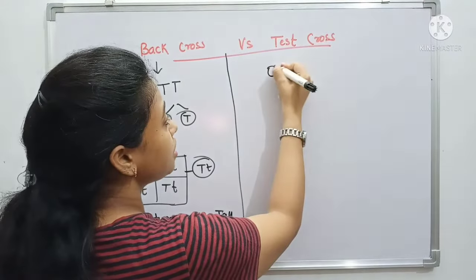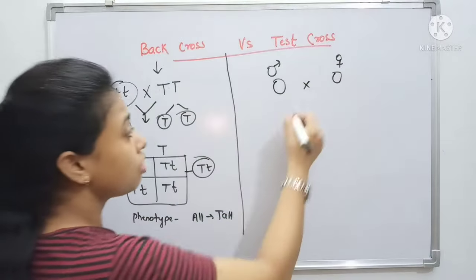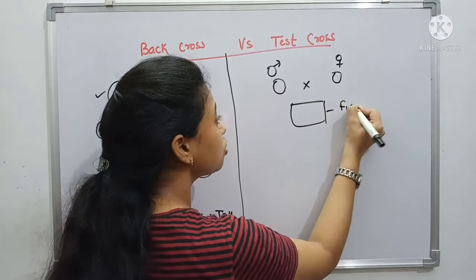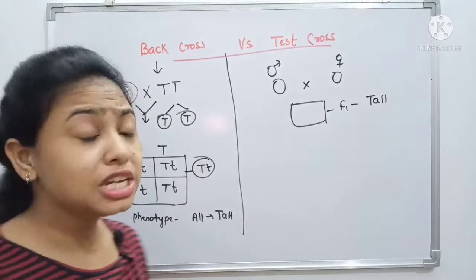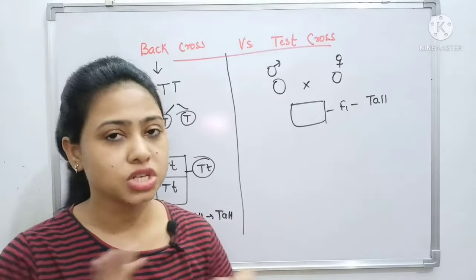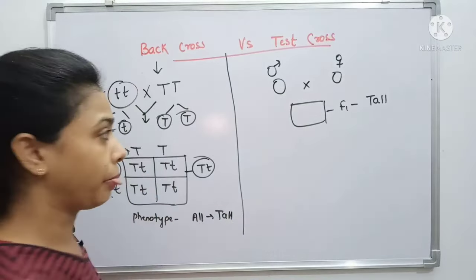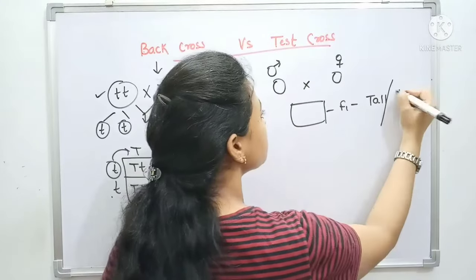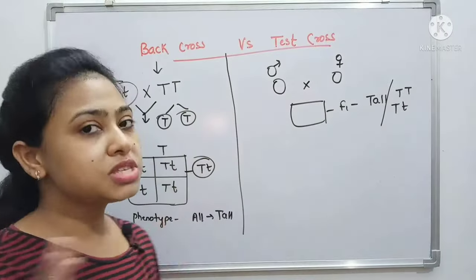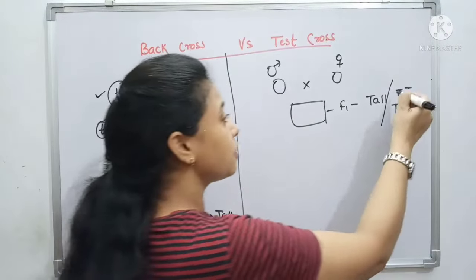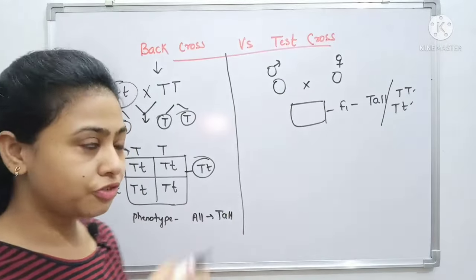Now, let's see what happens in the test cross. Suppose a mother and father made gametes and crossed them. After crossing, we get an F1 generation and all plants were tall. But now I don't know what the genotype is, because I don't have parental information. I just want to know the genotype. I know the phenotype, but who is responsible for tallness — homozygous dominant or heterozygous dominant?